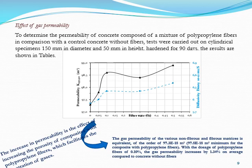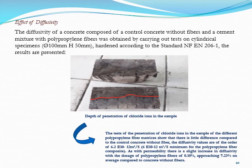For gas permeability, we can see that with a dosage of polypropylene fibers of 0.10 percent, the gas permeability increases by 1.24 percent on average compared to concrete without fibers. According to the penetration tests, the samples of the different polypropylene fiber matrices show that there is little difference compared to the control concrete without fiber.